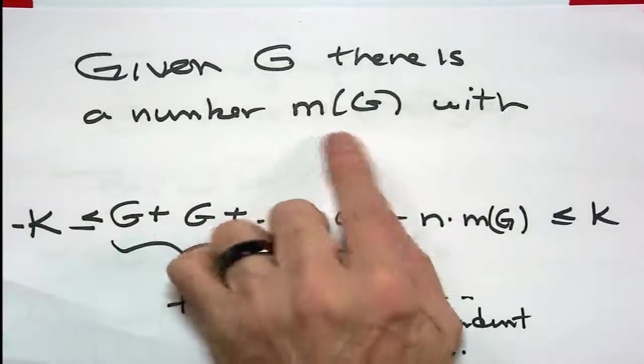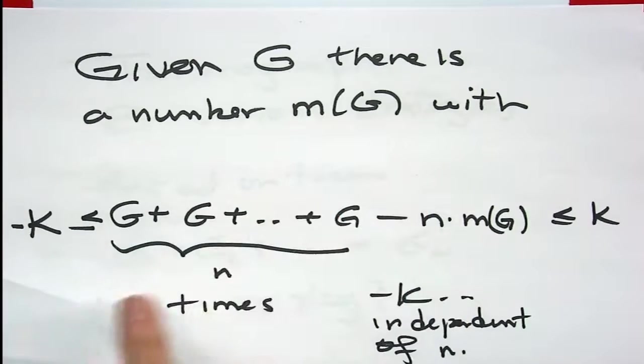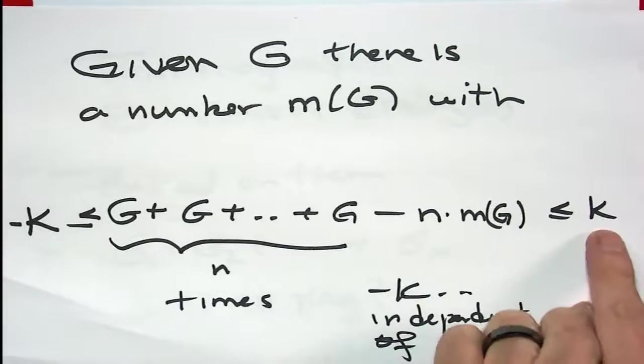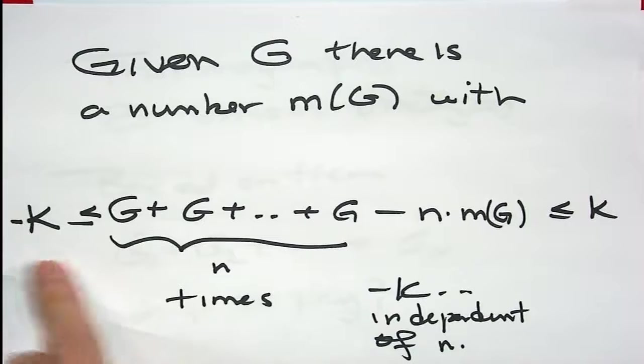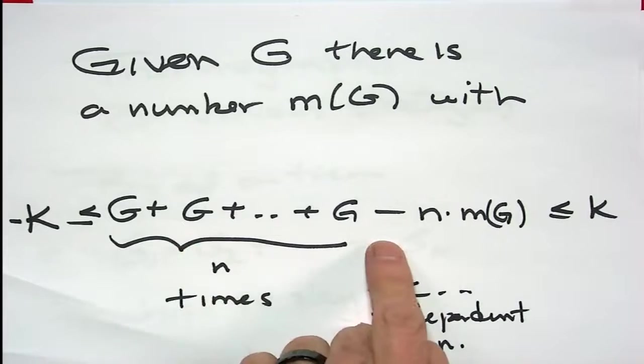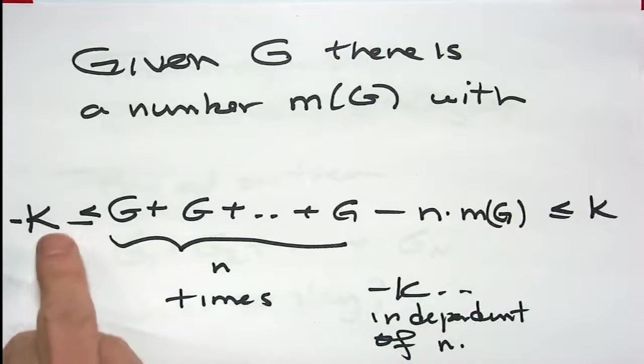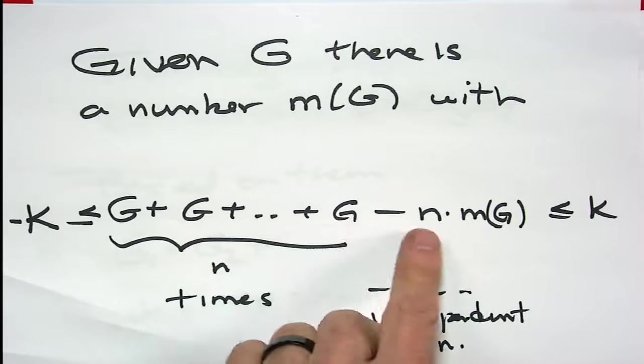And it says, given any game, there's a number M of G, called the mean value of G, such that, and a number K, independent of N, such that when you add up G N times, that this minus N times the mean value,